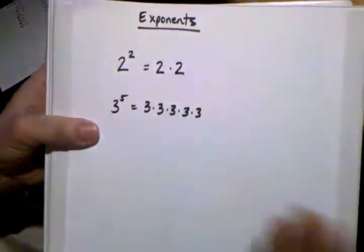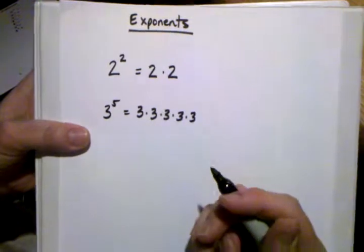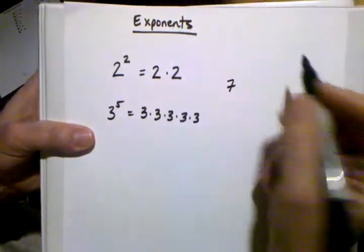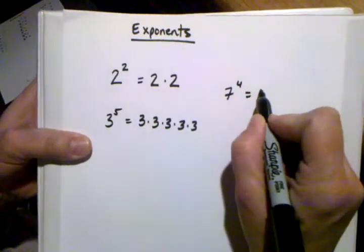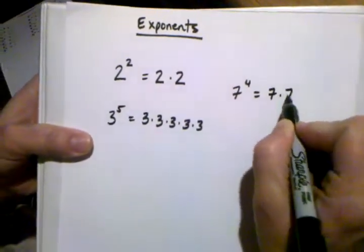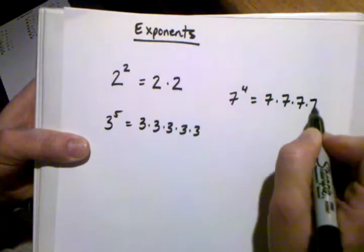Okay, and again, let's just pick another number. What if I were to do 7 to the fourth power? Now, all that means is I'm multiplying 7 a total of 4 times.